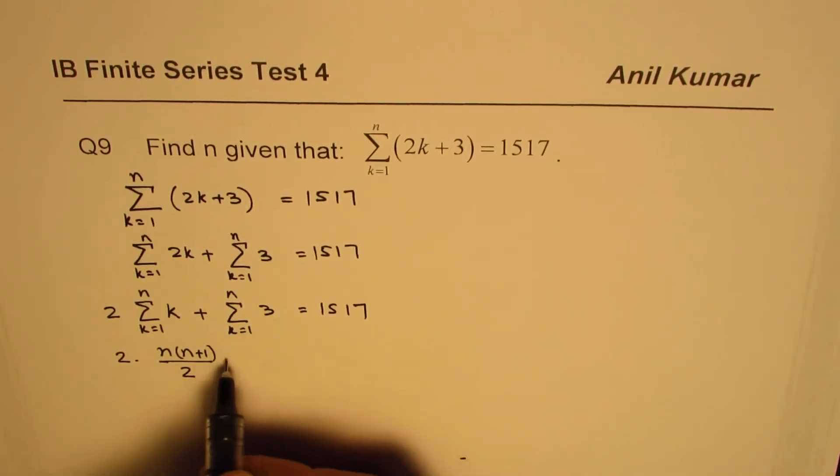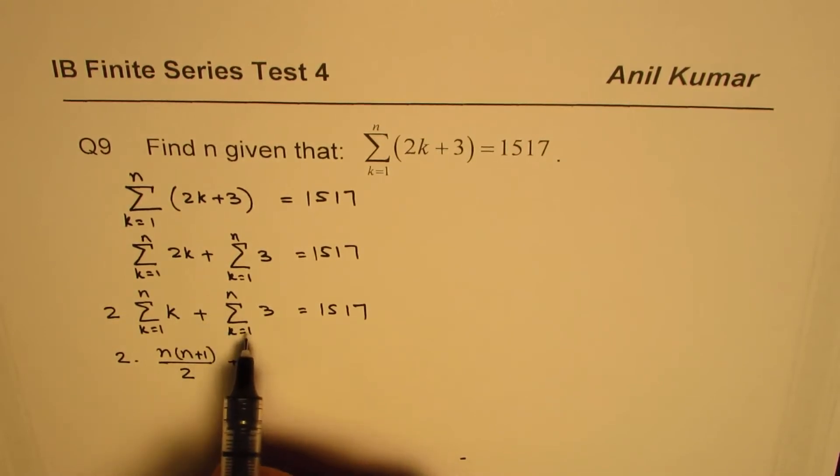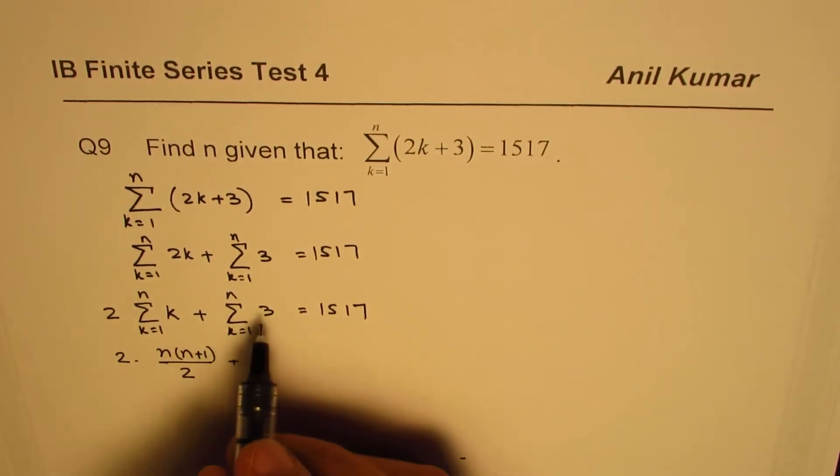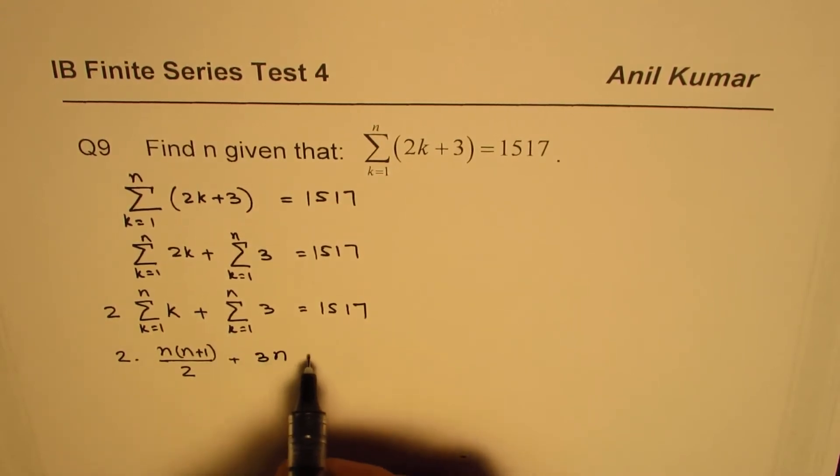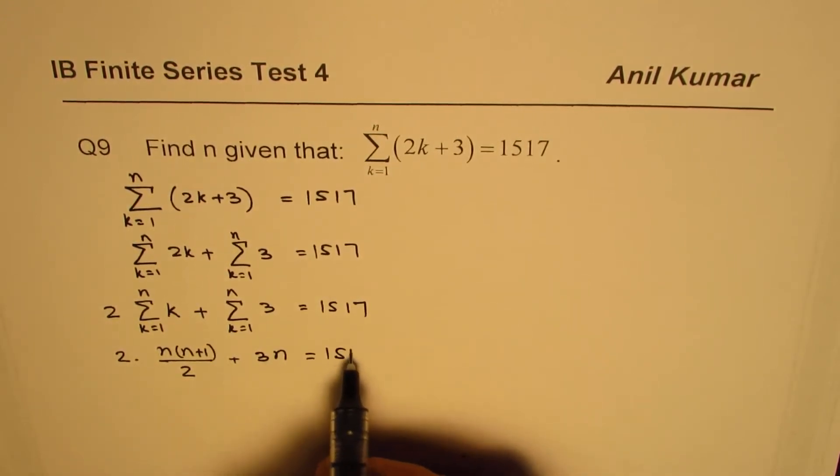You can use this formula. And here since there are n terms, n minus 1 plus 1, n terms, and you are adding 3 n times, so it is 3n, that should be equal to 1517.